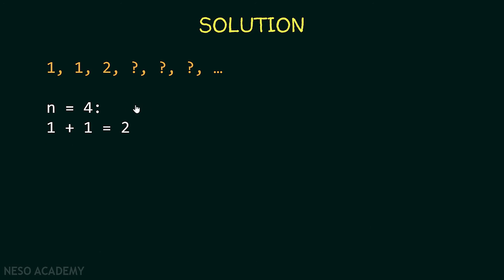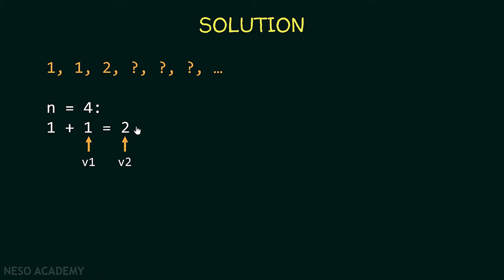Now let's see how we are going to program the solution. We have two variables, v1 and v2. Initially v1=1 and v2=1 — these are the first two elements in the sequence. To get the third Fibonacci number we add v1 and v2 to get 2. To get the fourth, v2 becomes 2 and v1 becomes the previous v2 value, then we add them again: 1+2=3.